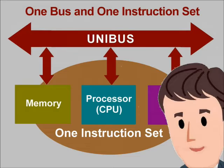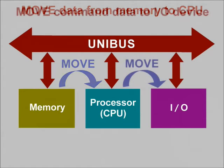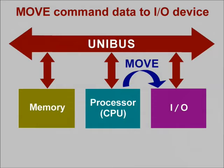As an example, let's take a simple instruction like MOVE and see how it might be used in our PDP-11 system. Basically, a move instruction is used to do just what its name implies — move data from one place to another. In this case, we're using a move instruction to move data from memory to the CPU. Now let's take this same move instruction and use it with some other devices. Here, the move instruction transfers data from the processor into an I/O device. Perhaps this data represents command information so we can tell the device what task to perform, such as start, stop, or change speed.